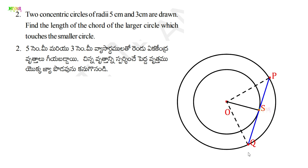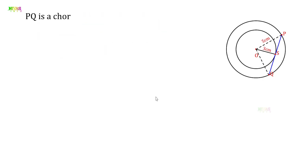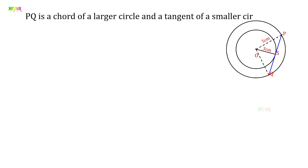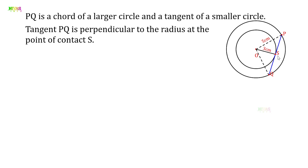PQ is the chord and S is the point of contact. PQ is a chord of the larger circle and a tangent of the smaller circle. Since PQ is tangent to the smaller circle, PQ is perpendicular to the radius OS at the point of contact S — so angle OSP is 90 degrees.